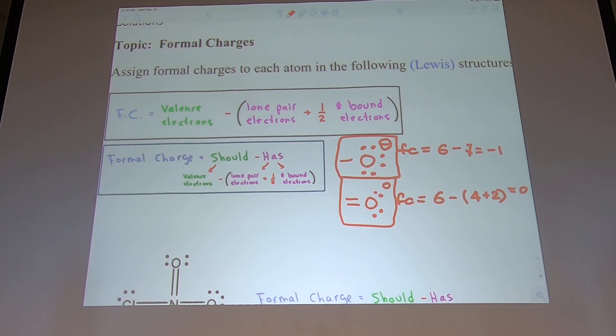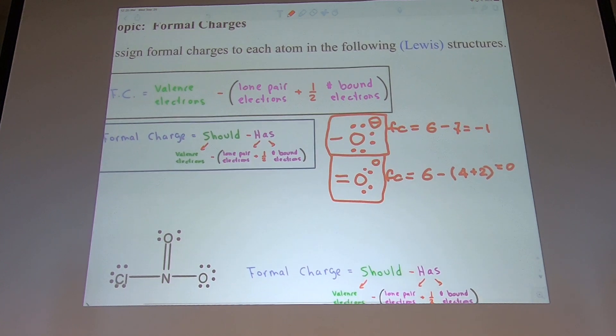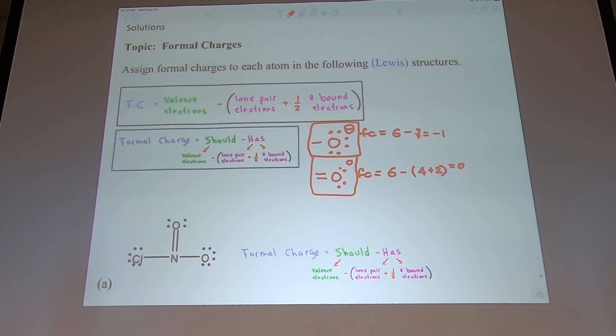What about nitrogen? If I draw the nitrogen this way, does it satisfy the octet rule? Eight electrons, okay. Now let's do the FC. They should have five, you see two electrons, you see three bonds, so this is neutral.